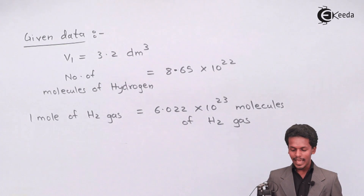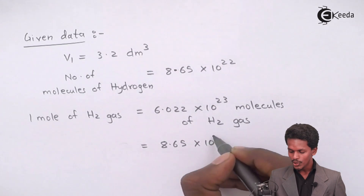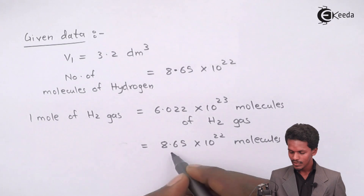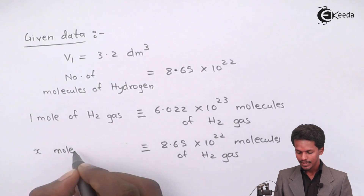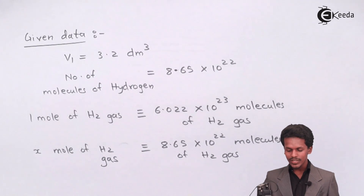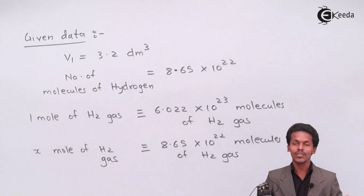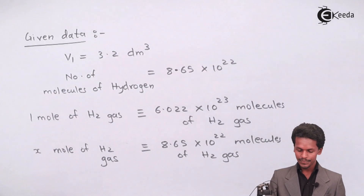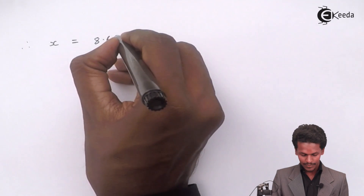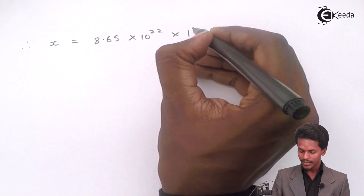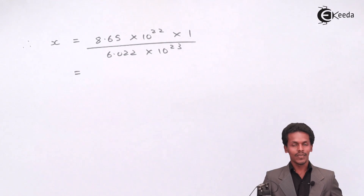Since they have given the number of particles, I will set up the conversion. So 8.65 × 10²² molecules of H₂ gas will occupy X moles of H₂ gas. I will cross-multiply to calculate the initial number of moles when 8.65 × 10²² particles of hydrogen are present. Therefore, X equals 8.65 × 10²² multiplied by 1, divided by 6.022 × 10²³.